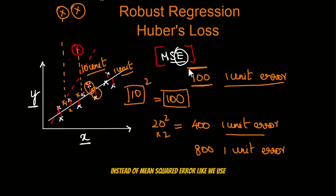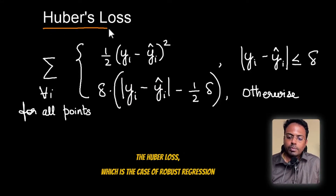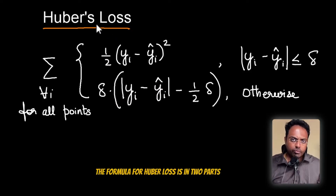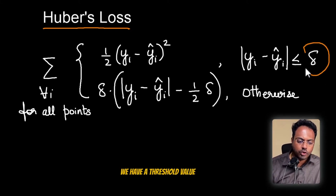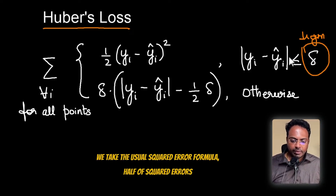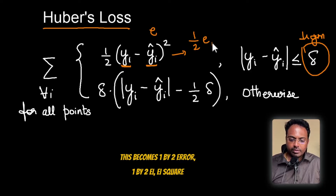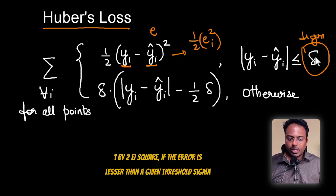So how do we tackle this? Instead of mean squared error as used in linear regression, we are going to use something called the Huber loss — which is the case of robust regression. The formula for Huber loss has two parts. We have a threshold value called sigma. If the error is less than sigma, we use the usual squared error formula: one-half times ei squared.